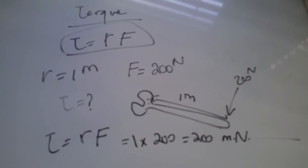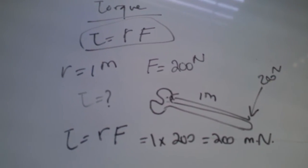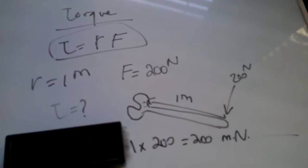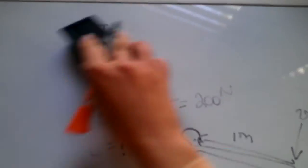One times 200, that gives me 200 meter-newtons. So this is a torque problem. Now let's move on and talk about problems that are dealing with different torques on the same problem, talking about stability.